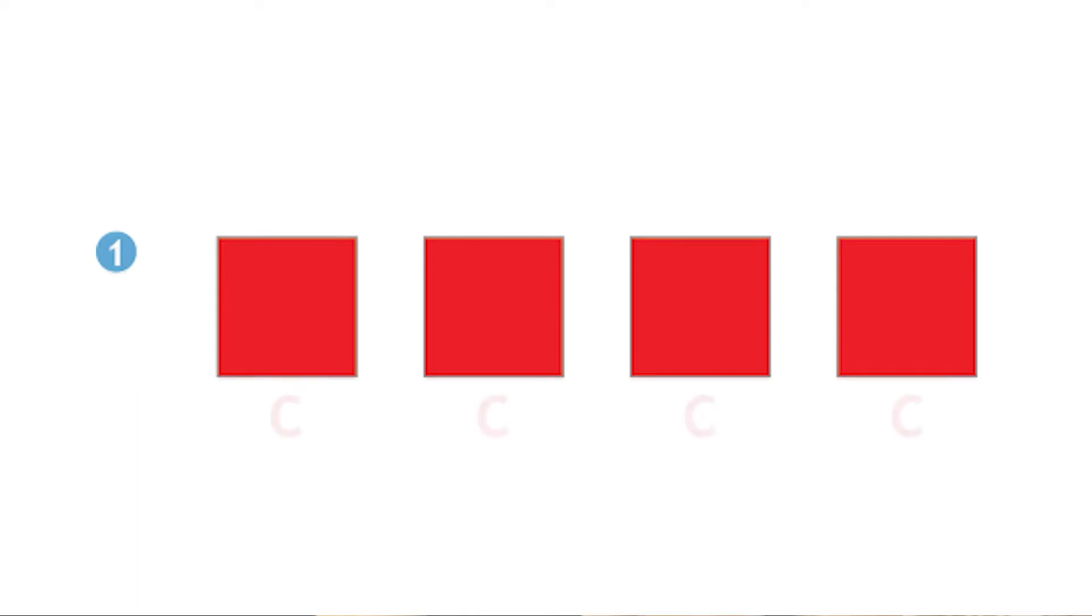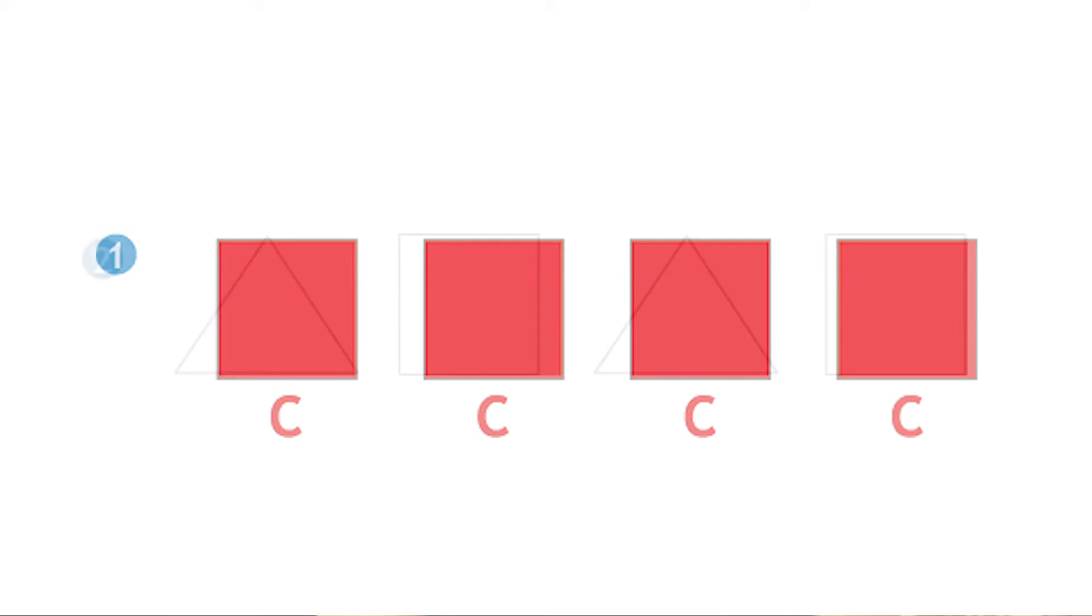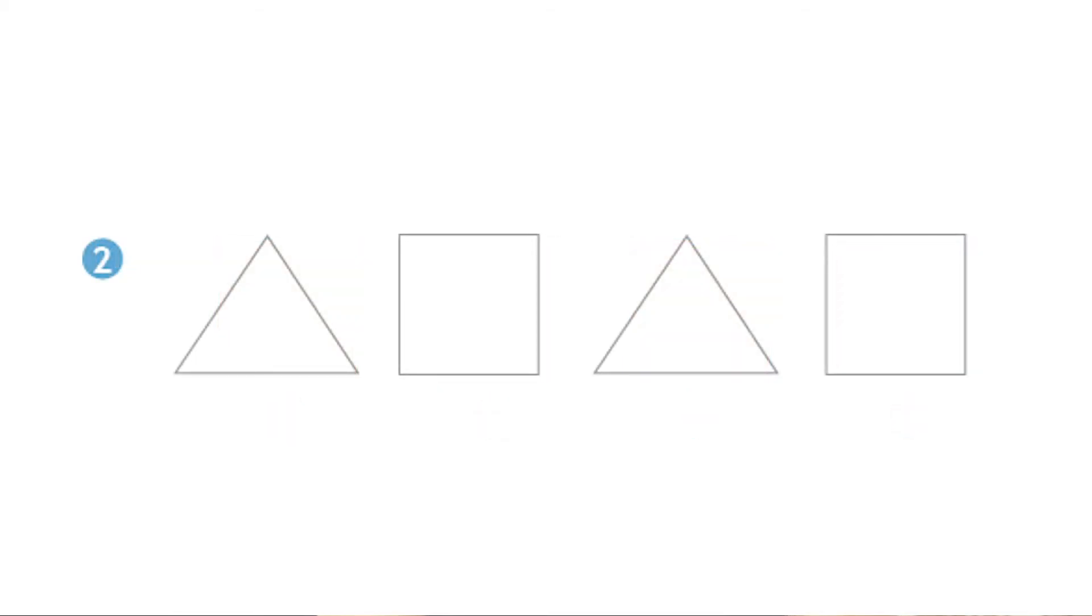In exercise number two, we're adding the triangle. Here we see triangle, square, triangle, square. What note is the triangle? D, that's right. And the triangle is what color? Orange, excellent job.